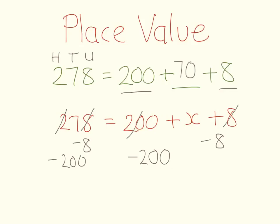And so, we are left with 70 on this side equals x. So, therefore, our missing number must be 70. It doesn't matter which way you do it. It will give you the same answer.